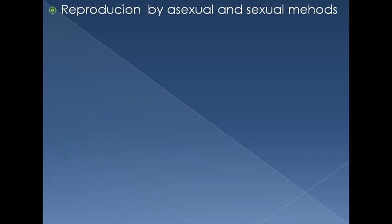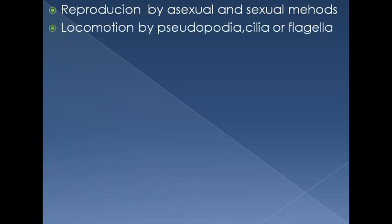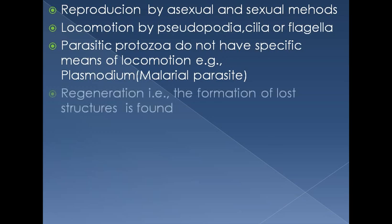Shelled protozoa include foraminifera, which are found in both freshwater and marine water. Animal-like protists may reproduce by asexual or sexual methods. Movement is through pseudopodia, cilia, or flagella. Parasitic protozoa do not have specific means of locomotion, as they do not need them since they are found inside the host. These include Plasmodium, the malaria parasite. Regeneration is also common in protists.